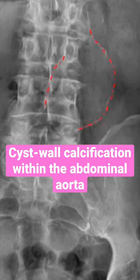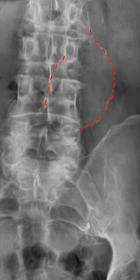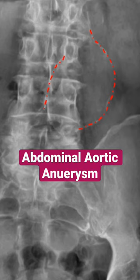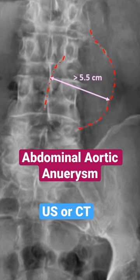Any time you see this on a frontal image, double check the measurements to assess for dilatation of the abdominal aorta. Any enlargement over 5.5 centimeters should be assessed appropriately with ultrasonography or CT.